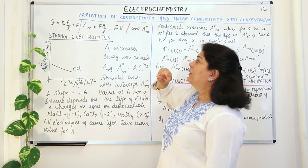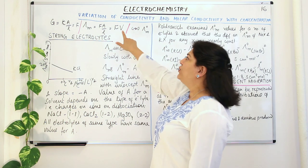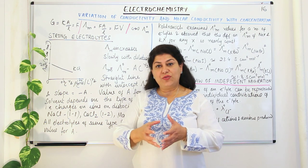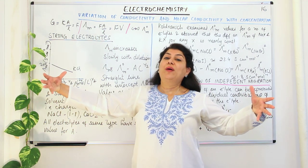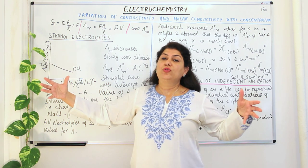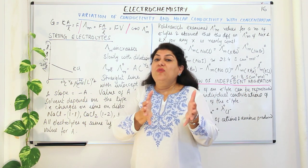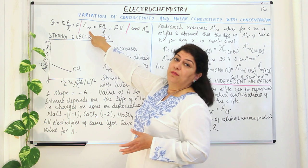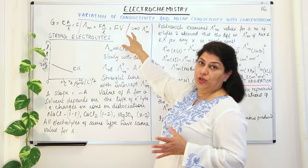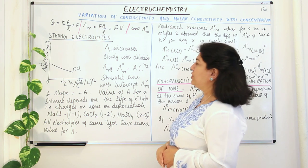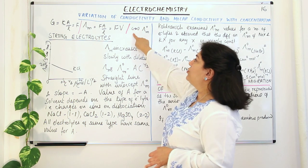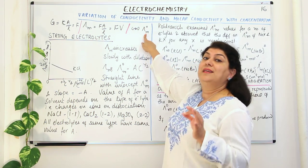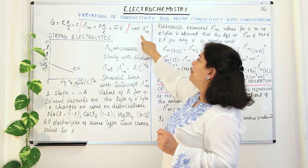From this we understood that molar conductivity increases with increase of volume, and volume increases when the concentration decreases. When there is less concentration, more volume of the solution will be required to have one mole of the solute. When the concentration is high, lesser volume will have one mole of the solute. So molar conductivity is directly proportional to volume and inversely proportional to concentration. When the concentration approaches almost zero, the molar conductivity is known as the limiting molar conductivity, represented by λ°m.